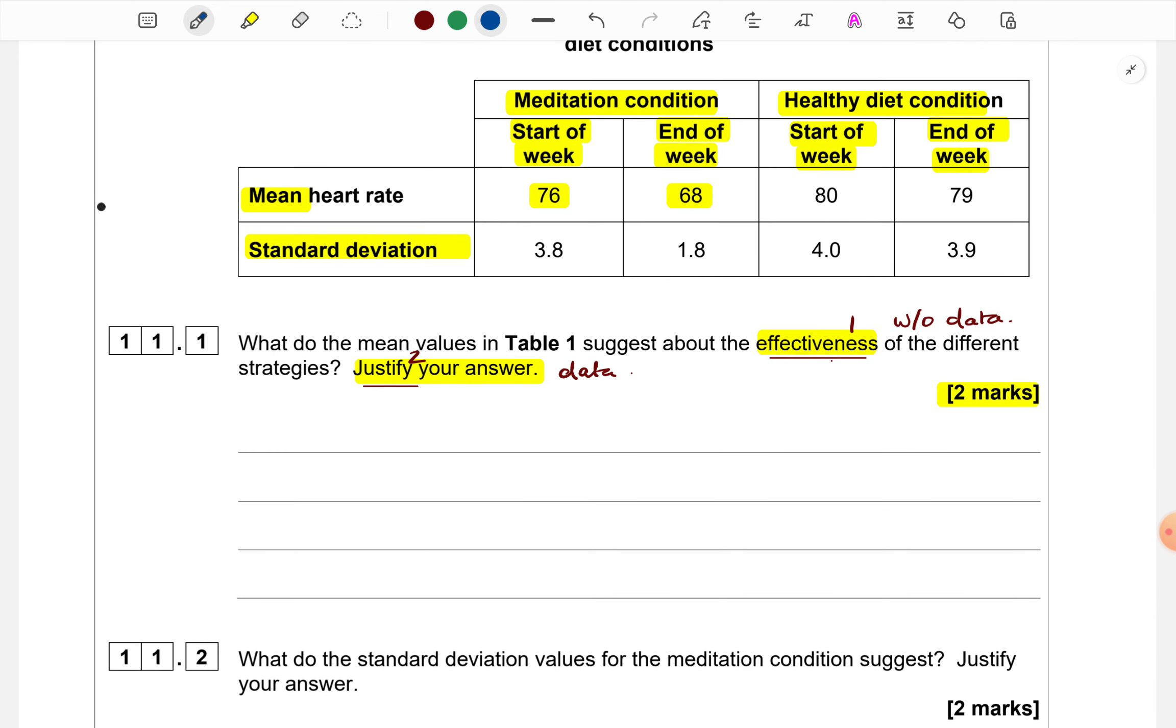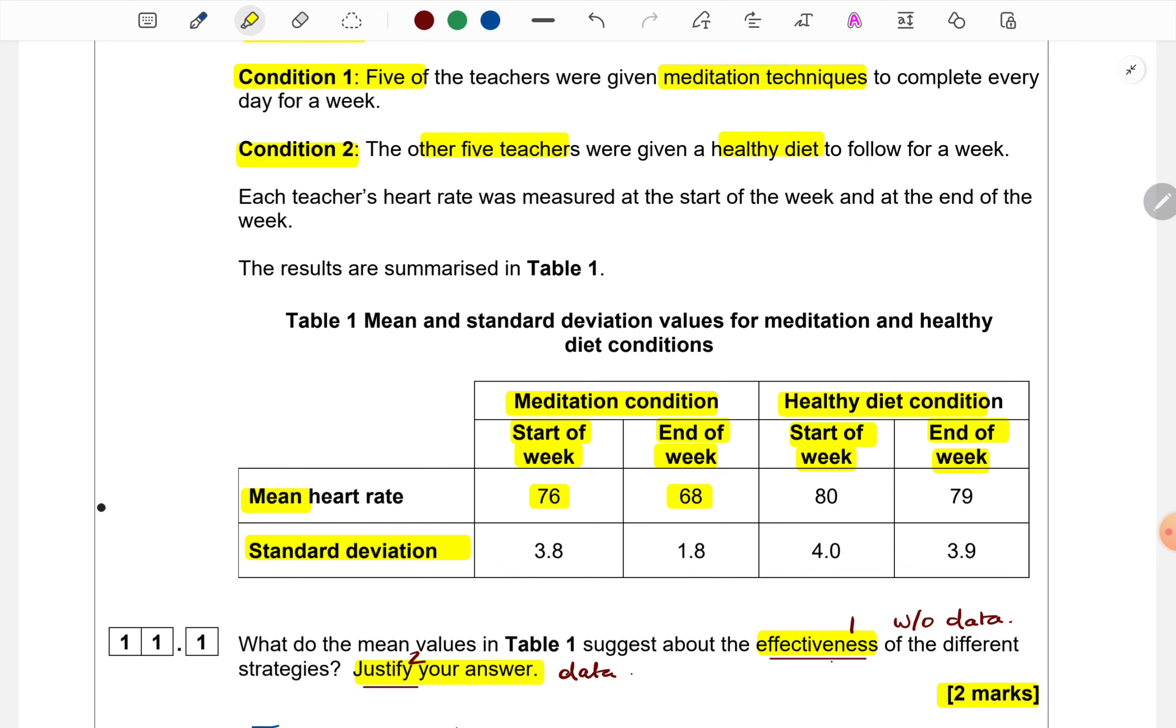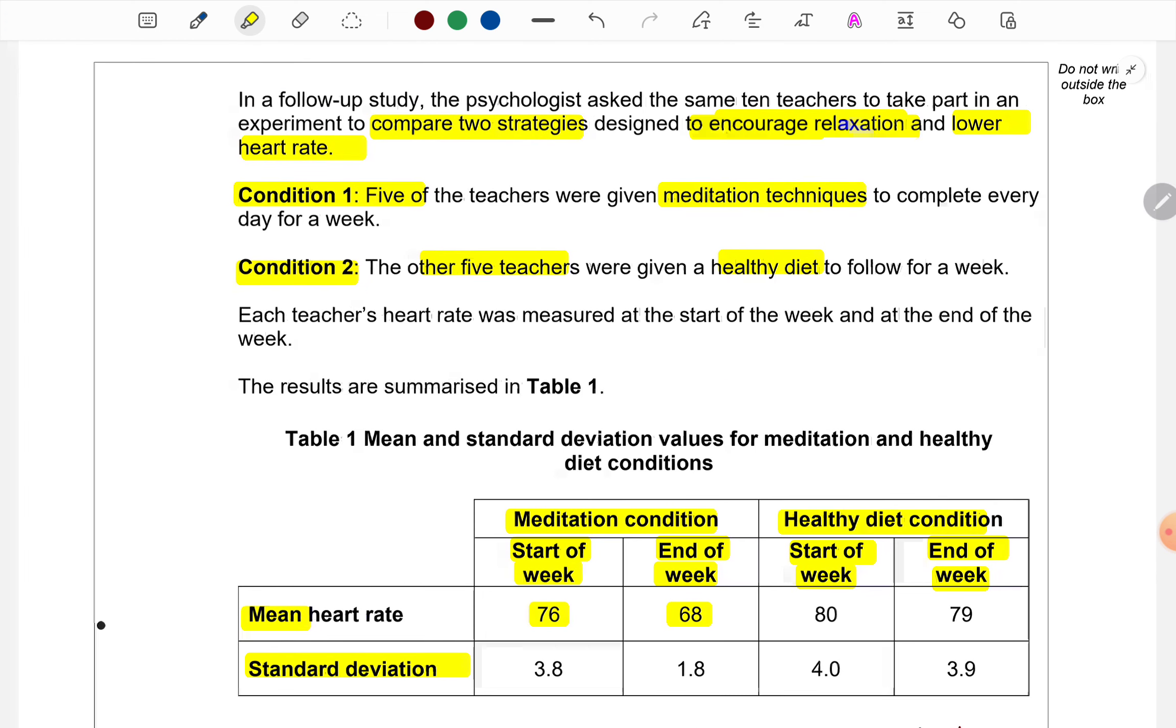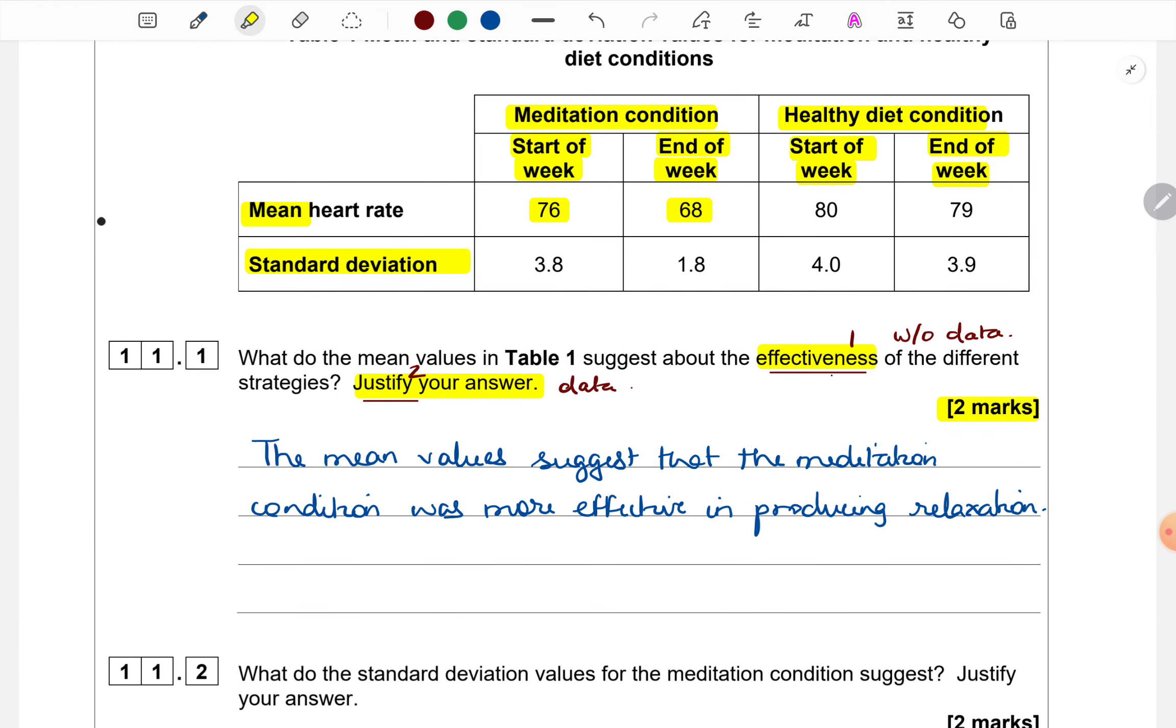I am writing a sample answer for this one. The mean values suggest, as always I am taking the wording from the question itself, that the meditation condition was more effective in producing relaxation. This wording I am getting from the top, from what we had read, that the researcher wanted to encourage relaxation. And why I am saying this, because we can see for the meditation condition, the heart rate has come down by eight points at the end of the week. But for the healthy diet condition, it is more or less the same. It has come down only by one point. So using these figures only we have to justify.